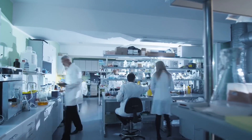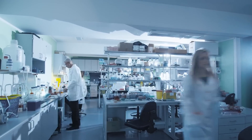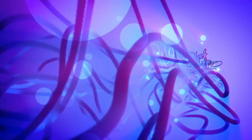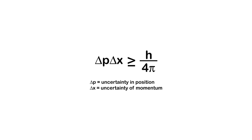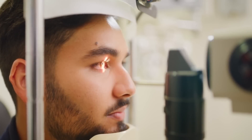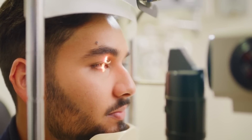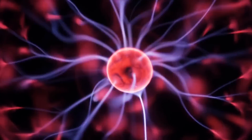Another marvel in the quantum realm is the concept of superposition. In our everyday lives, things either are or they aren't — a switch is either on or off. But in the quantum world, things can be both at the same time. A particle can exist in multiple states simultaneously until it's observed. Once observed, it chooses a state. This isn't just theoretical; it's been proven in experiments like the double-slit test. It challenges our classical views of reality. If something can be in two states at once, what does that say about the nature of reality itself? Are our perceptions truly limiting what's possible?